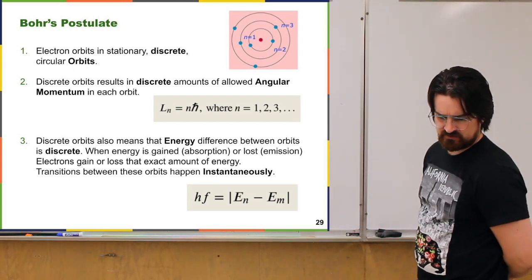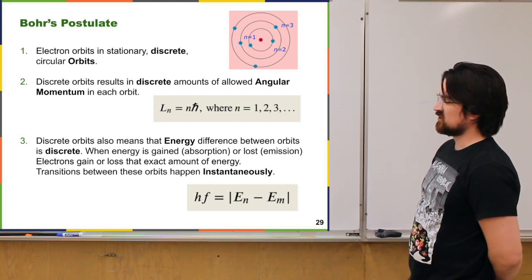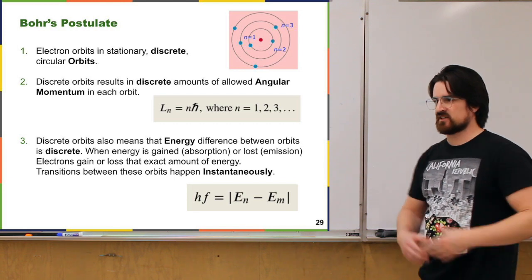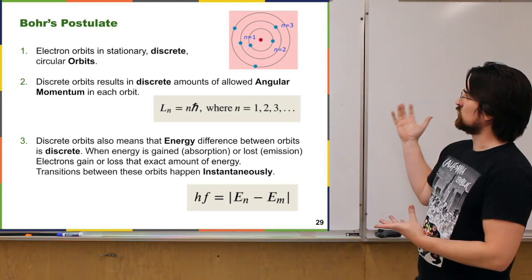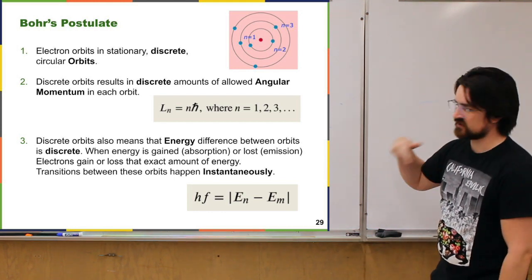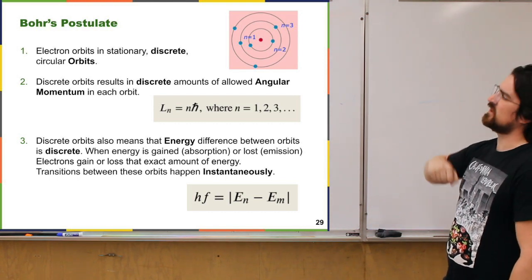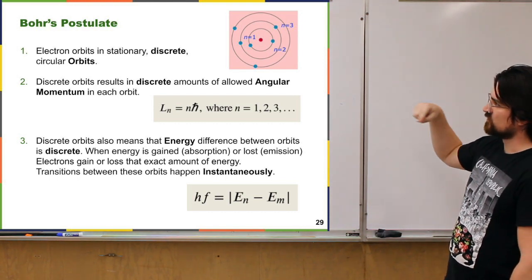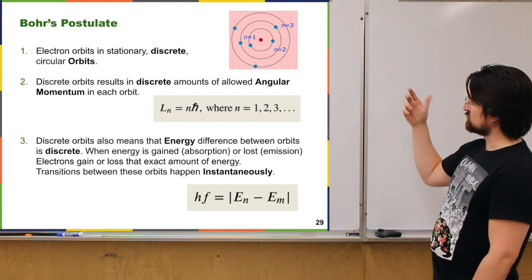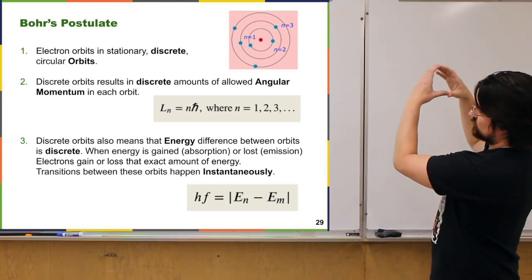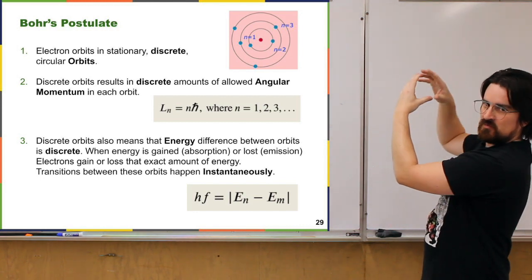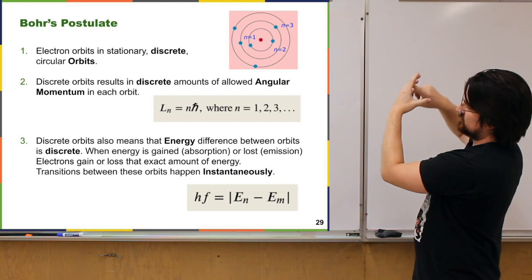Bohr's postulates basically take the quantization idea and apply it to electrons moving around in an atom. The first postulate says that electrons are orbiting the center of the atom around a heavy, positively charged nucleus in stationary, stable, discrete circular orbits. Discrete means there's this orbit where n equals 1, and this orbit where n equals 2, and nothing in between — it's not a continuous spectrum.